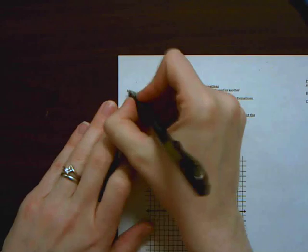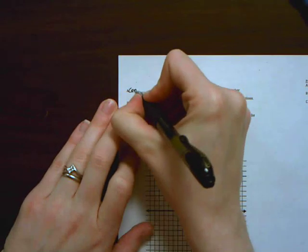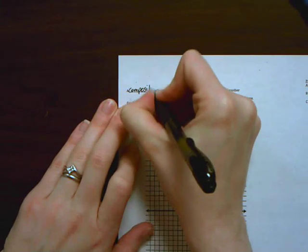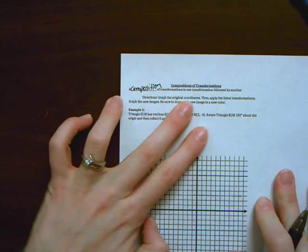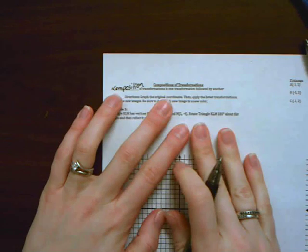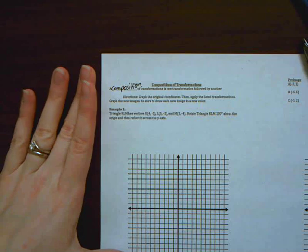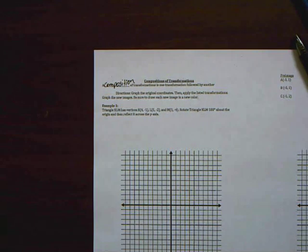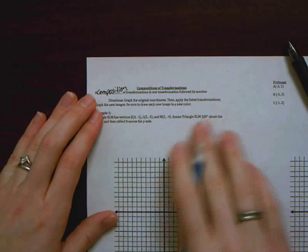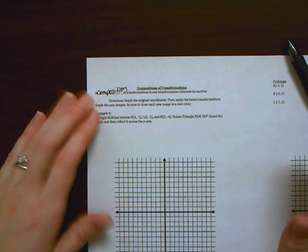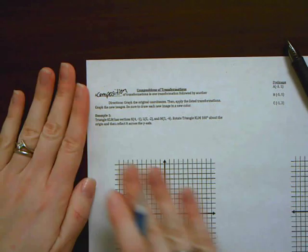So we've got right here a composition, and I'm sorry this blank is so tiny, but a composition of transformations is just one transformation followed by another. As always, our directions have us graphing the original coordinates first, and then we're going to apply a series of transformations,